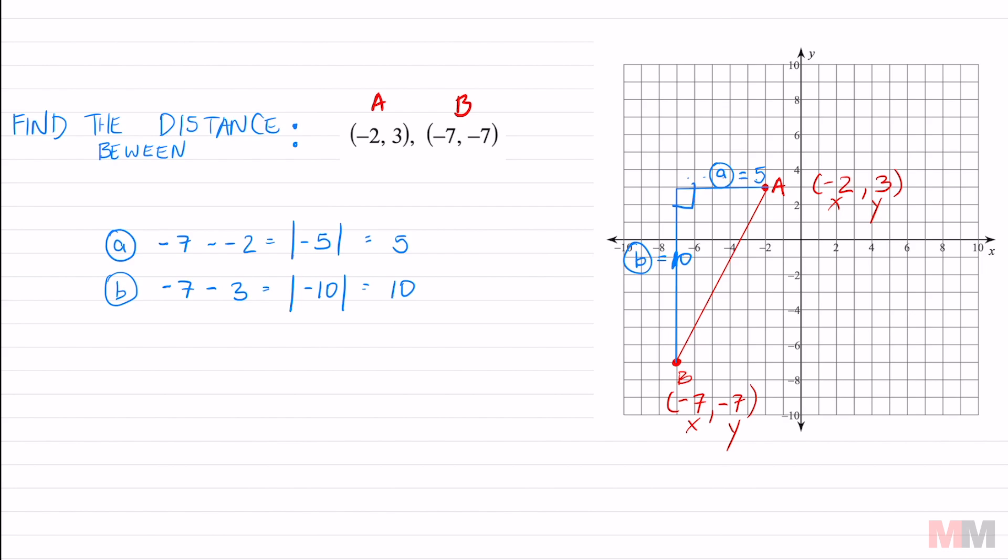And let's just jump back into the Pythagorean theorem. 5 squared plus 10 squared equals C squared. 5 squared is 25. 10 squared is 100 equals C squared. Add those up. You got 125 equals C squared.